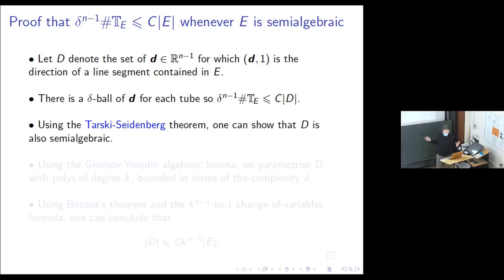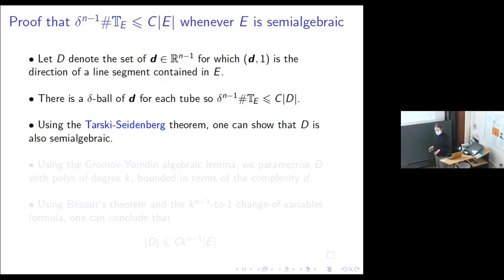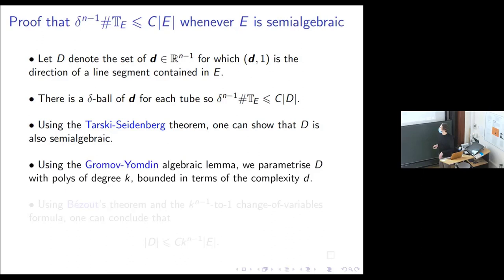We used the Tarski-Seidenberg theorem to show that D is also semi-algebraic. They proved that the orthogonal projection of a semi-algebraic set is also semi-algebraic, and we use a couple of applications of that to prove D is semi-algebraic. This theorem is actually a theorem in logic — it tells you that the first-order theory of the reals is decidable by reducing it to the zeroth-order theory, which doesn't involve quantifiers.